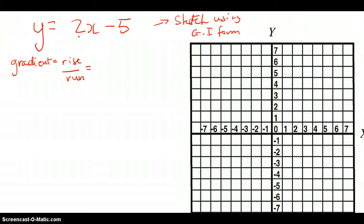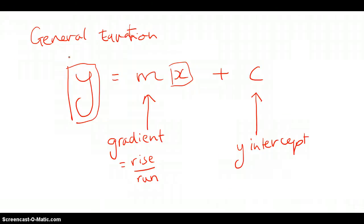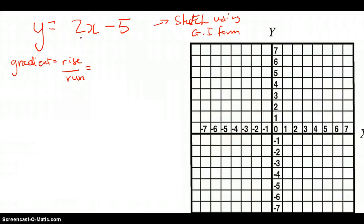What is the gradient for this specific example? Referring back to the general equation, the gradient is always the number in front of x. So for this question, the number in front of x is 2. And 2 can be written as 2 over 1, because 2 divided by 1 is 2. I'd like you to write it as 2 over 1 — you'll see why in a second.